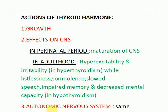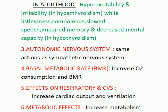Regarding the autonomic nervous system, thyroid hormone has the same actions as the sympathetic nervous system because it upregulates beta-1 adrenergic receptors in the heart. Therefore, beta-adrenergic blocking agents such as propranolol are a useful adjunct therapy for hyperthyroidism, as propranolol blocks the beta-adrenergic receptors in the heart.